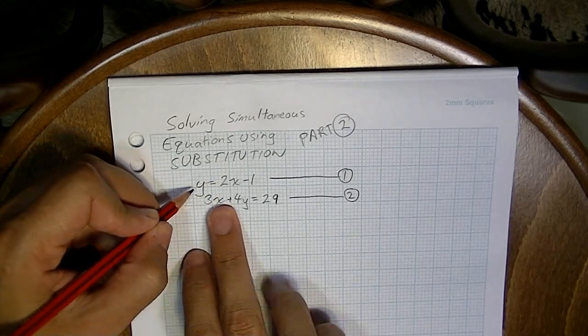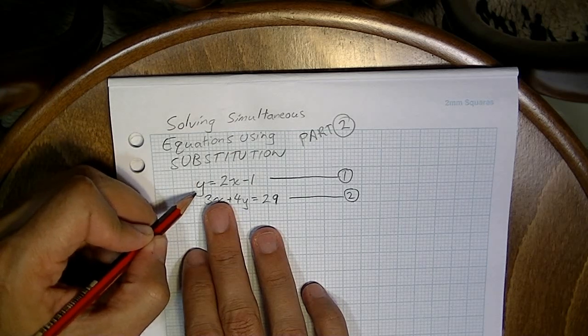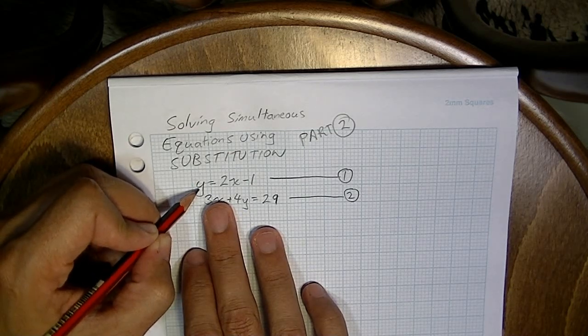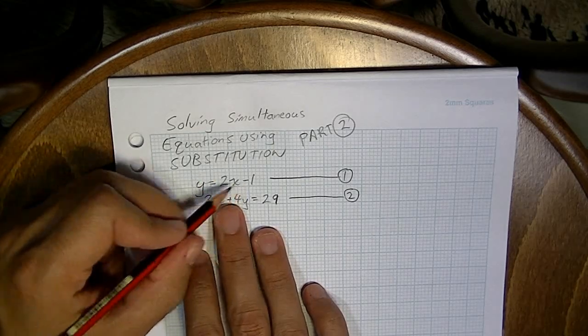Now, if you look at equation one, equation one is a nice simple one. It's got y as the subject. So we know that y is equal to 2x minus 1 in equation number one.